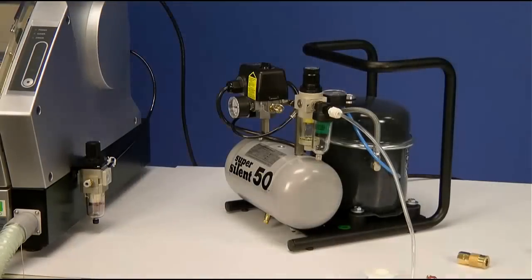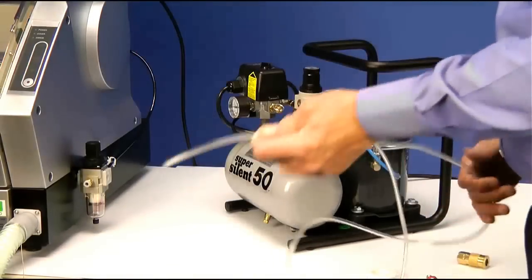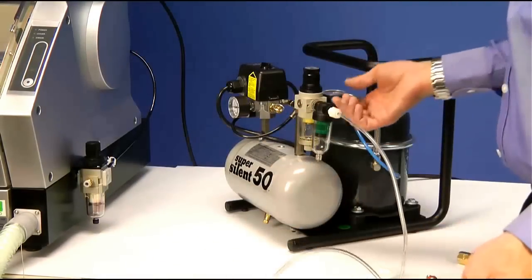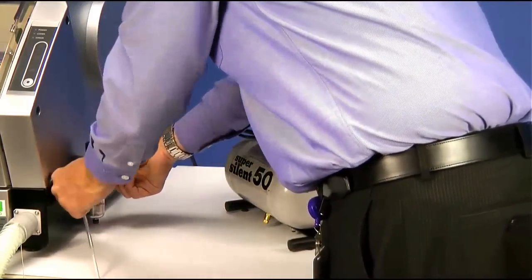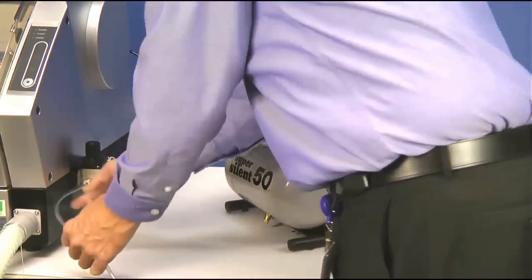Once you have your air compression system, take your polyurethane tubing. It needs to be six millimeters. Press it in flush into the regulator's quick connect valve, making sure there is no air leaks.